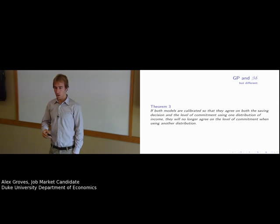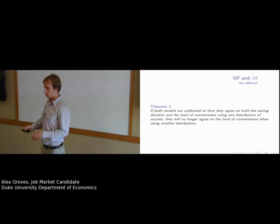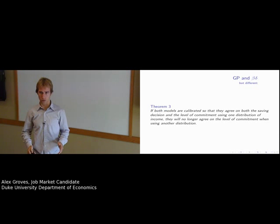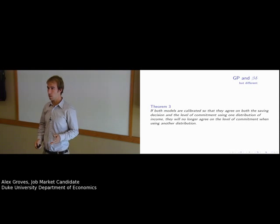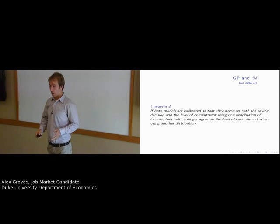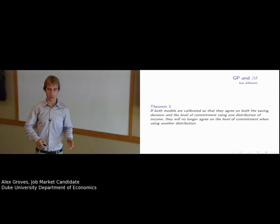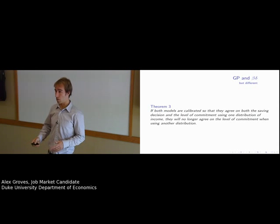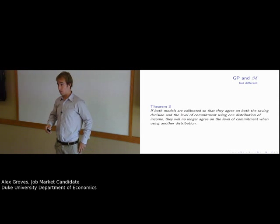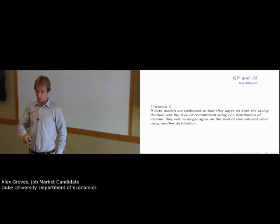However, if both models are calibrated using one distribution and then you try to use these calibrated models for prediction using another distribution, they may no longer agree. For example, if you calibrate both models using deterministic income and then try to use these calibrated models for a non-degenerate distribution of income, they would continue to agree on the level of savings but would now disagree on the level of desired commitment, with the Gulen-Pessendorfer model predicting a higher level of desired commitment than the beta-delta model.